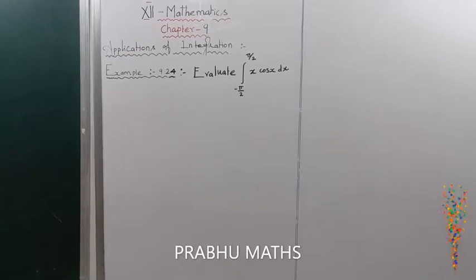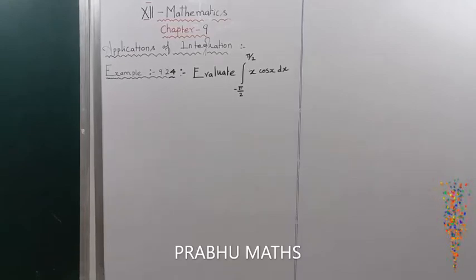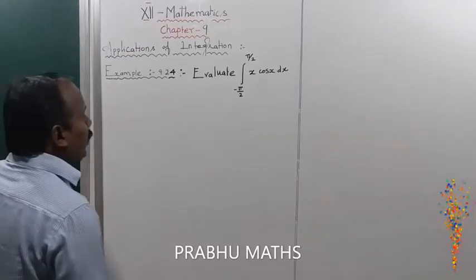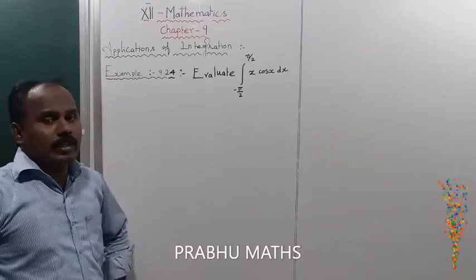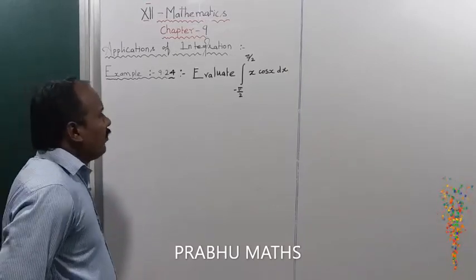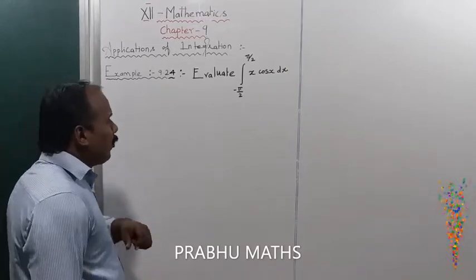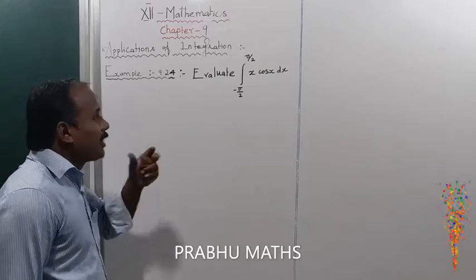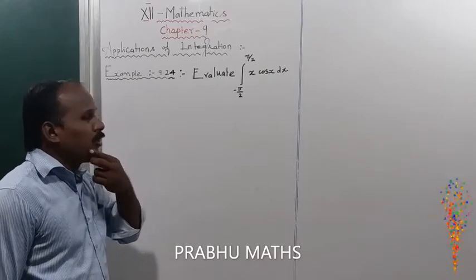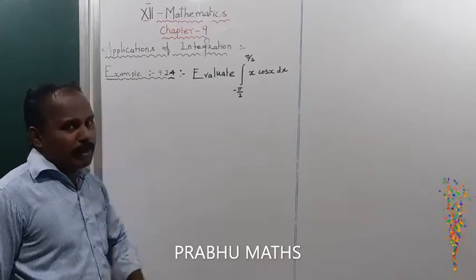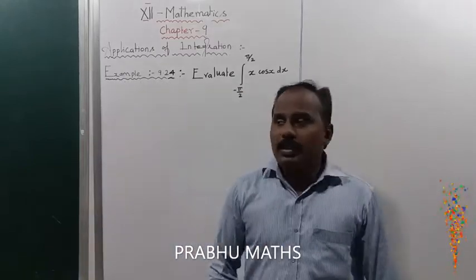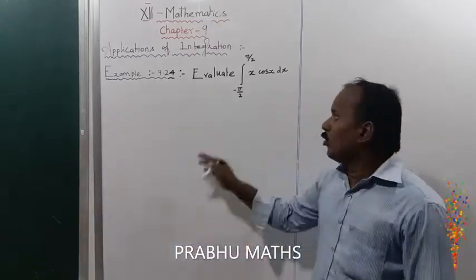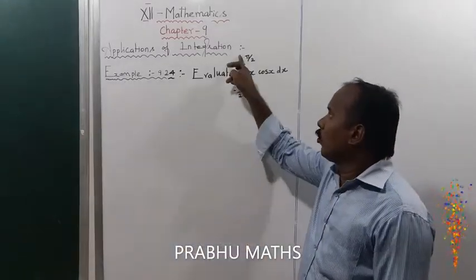Example 9.24: Evaluate the integral from minus 5/2 to plus 5/2 of x·cos(x)dx. The very important point of this integration is the limit from minus 5/2 to plus 5/2.